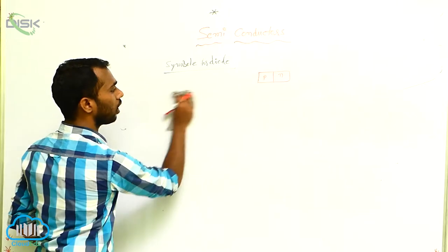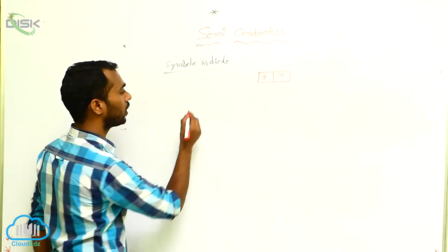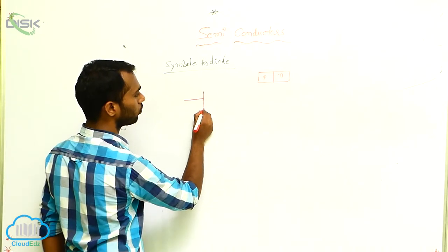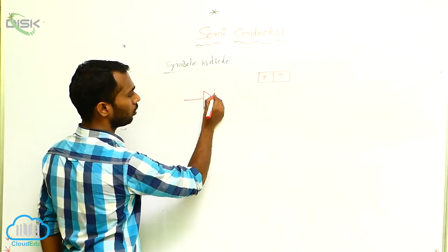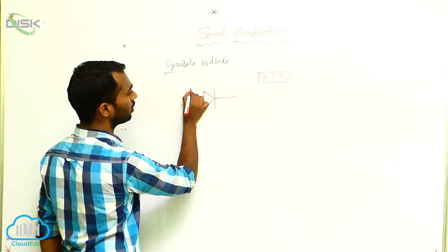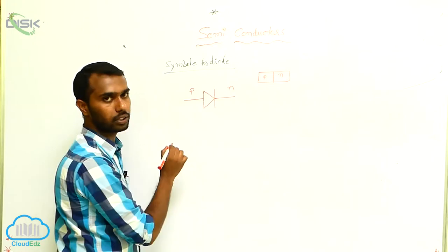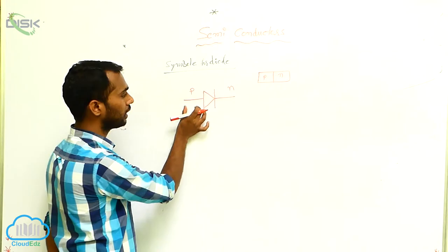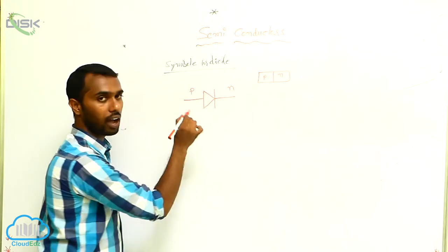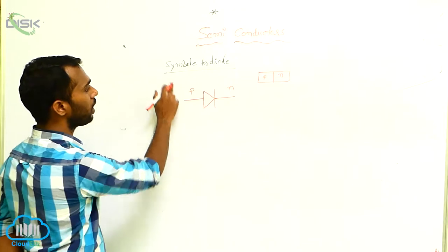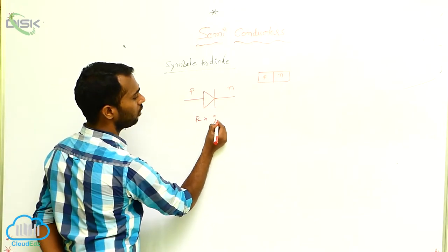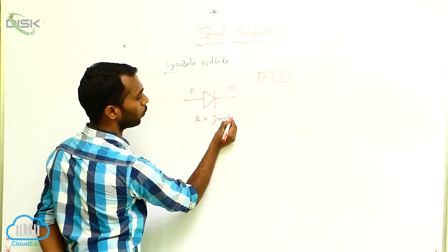To draw the diode symbol, take the P and N with an arrow. This is the P-type and this one is the N-type. The arrow represents the current direction. This is the P-N junction diode symbol.